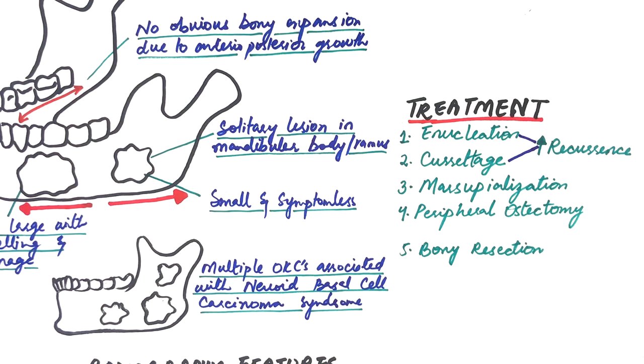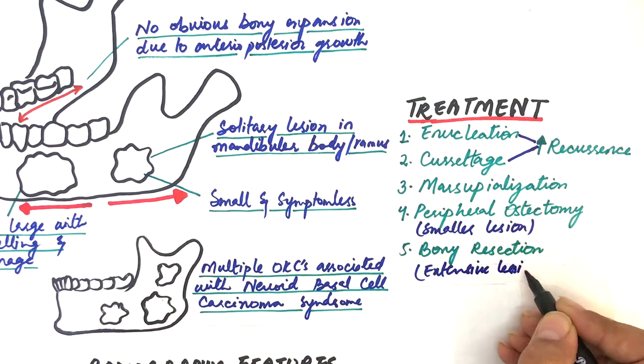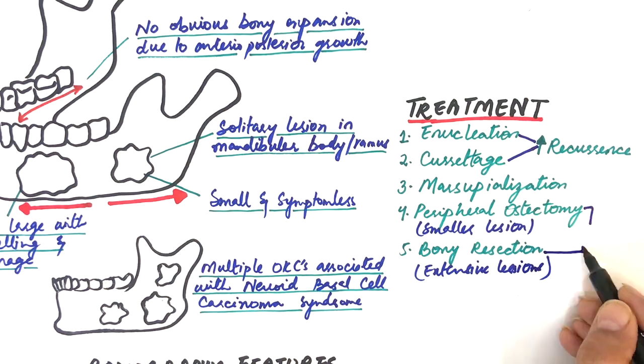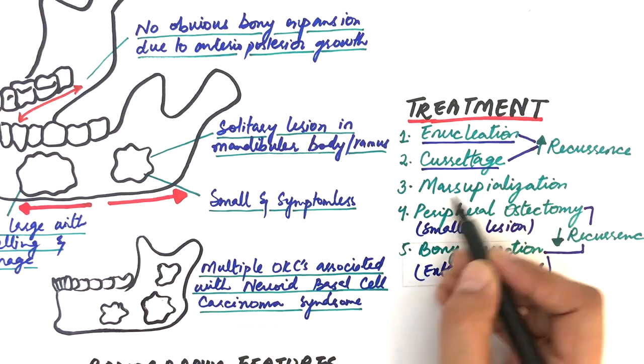Therefore, peripheral ostectomy in smaller lesions and bony resections in extensive lesions can be performed to reduce the recurrence rate of the cyst.